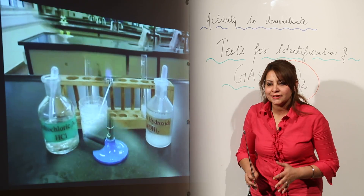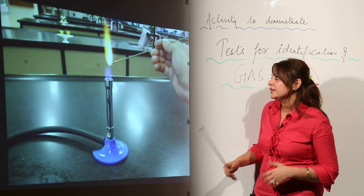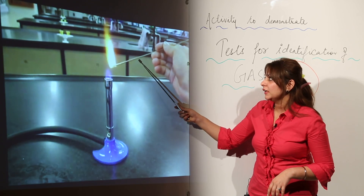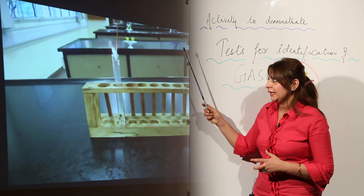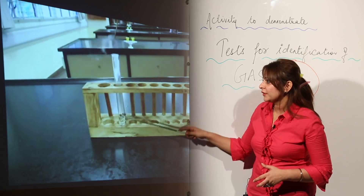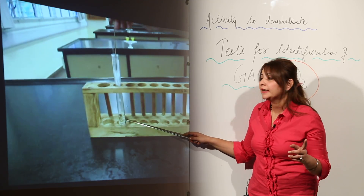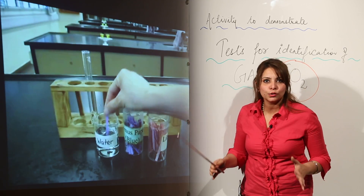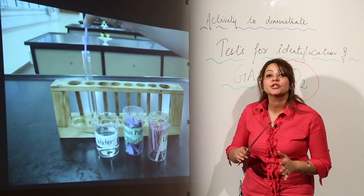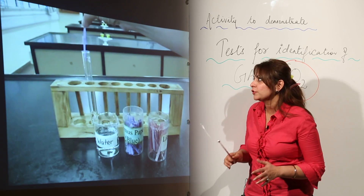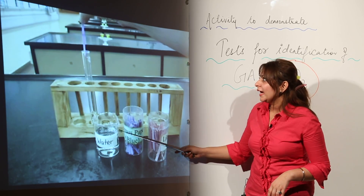This is one of the tests which shows that when carbon dioxide gas is passed through lime water, it turns lime water milky. We have one more test — we are lighting this splinter and bringing it to the beaker which contains the carbon dioxide. It blows off because carbon dioxide gas is a non-supporter of combustion.